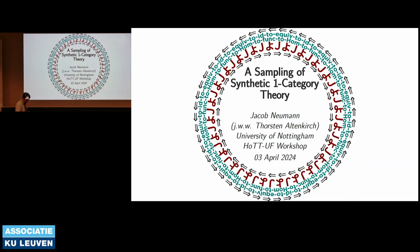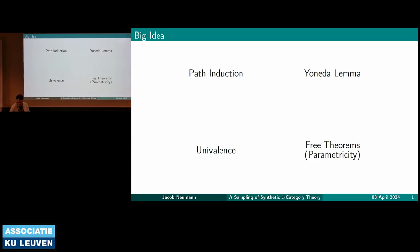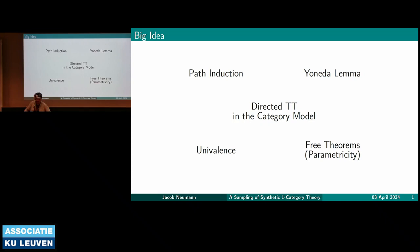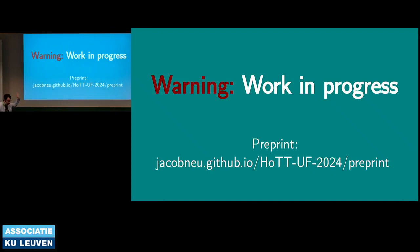Here are a few of my favorite things: I like path induction, the Yoneda lemma, univalence, and free theorems, or parametricity. My goal in this talk is to spin together a wild theory that's going to connect all these different dots. The theory I claim does this is the directed type theory of the category model. A warning: this is a work in progress. I have a preprint available which spells out the core details of this construction, but some of the more ambitious applications and connections are not there yet.